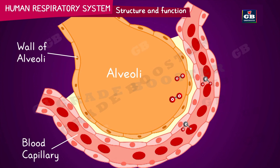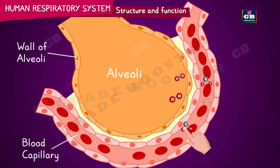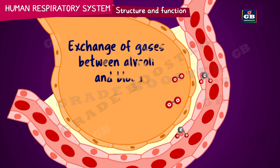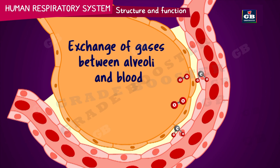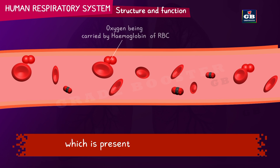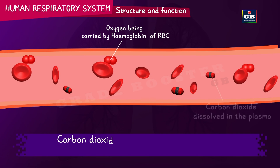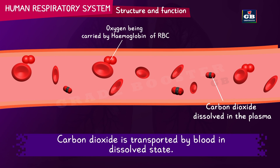The exchange of gases takes place between the blood and the alveoli. The blood coming from the body parts has more carbon dioxide, while the air entering the alveoli has more oxygen. Due to this difference in concentration, the exchange of gases takes place. The oxygen collected into the blood is transported by a pigment called hemoglobin, present in the RBCs of blood. Carbon dioxide is transported by the blood in dissolved state.